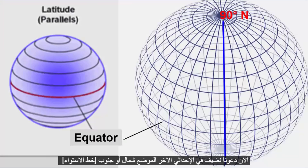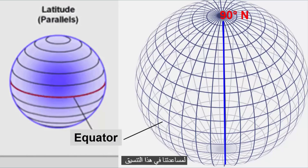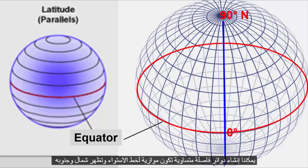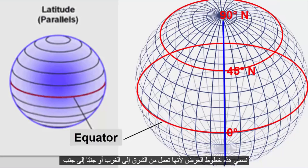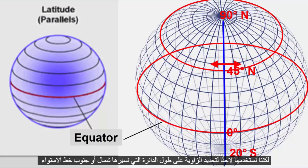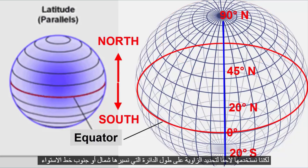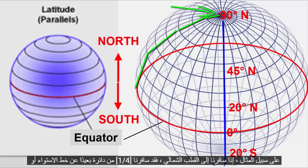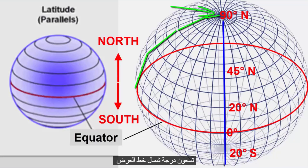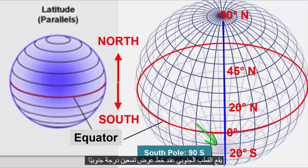Now let's add in the other coordinate — the position north or south of the equator. To help us with this coordinate, we can generate equal-interval circles that are parallel to the equator and appear north and south of it. We call these latitude because they run east-west, or side-to-side, laterally. However, we use them to determine the angle along a circle that we travel north or south of the equator. For example, if we travel to the North Pole, we have traveled one-quarter of a circle away from the equator, or 90 degrees north latitude. The south pole is at 90 degrees south latitude.